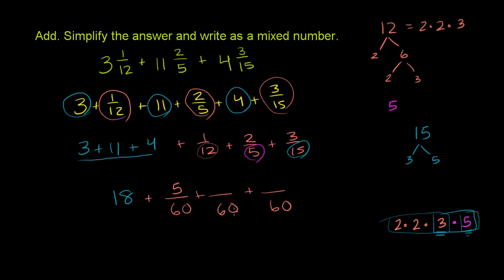To go from 5 to 60 in the denominator, we have to multiply by 12. So we have to do the same thing for the numerator. 12 times 2 is 24. And the last one, 15 to 60, you have to multiply by 4. So you have to do the same thing in the numerator. 4 times 3 is 12.